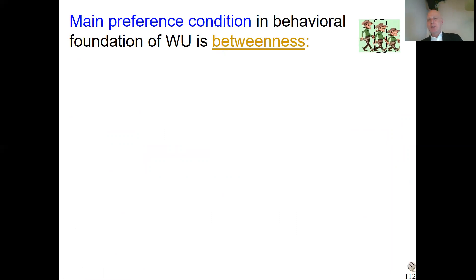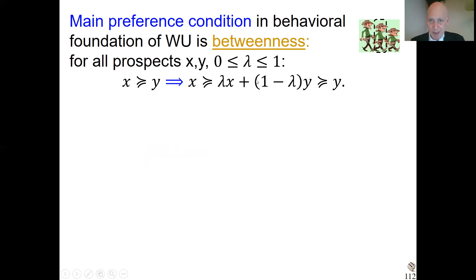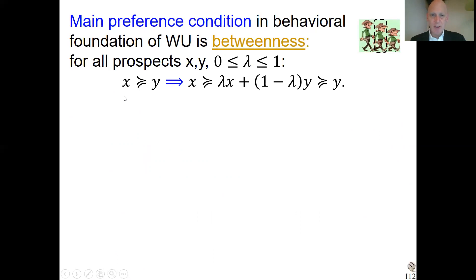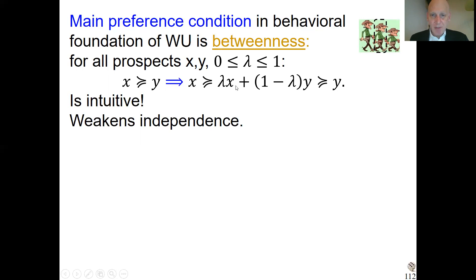There was a behavioral foundation using preference conditions. The main preference condition for this theory is called betweenness. If prospect x is preferred to y, then every probabilistic mix of the two in preference is between those two. That makes a lot of sense — if you get either x or y with some probability, you will like that somewhere between x and y. It's weaker than independence: if you recall the independence condition, betweenness is roughly the independence condition when two of the three lotteries are the same. So it's a weakened version of the expected utility condition.